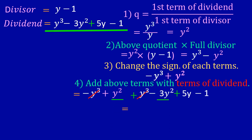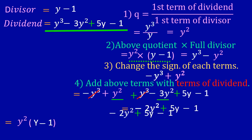After cancellation, y² and minus 3y² are like terms, giving minus 2y². The remaining terms plus 5y minus 1 come down unchanged. So our new remainder is minus 2y² plus 5y minus 1. We can write the equation so far as y² into y minus 1, plus the remainder minus 2y² plus 5y minus 1.